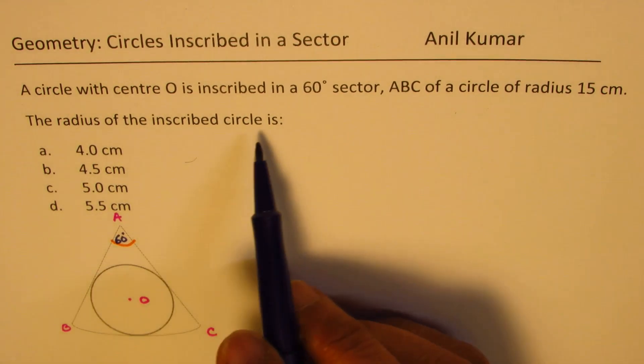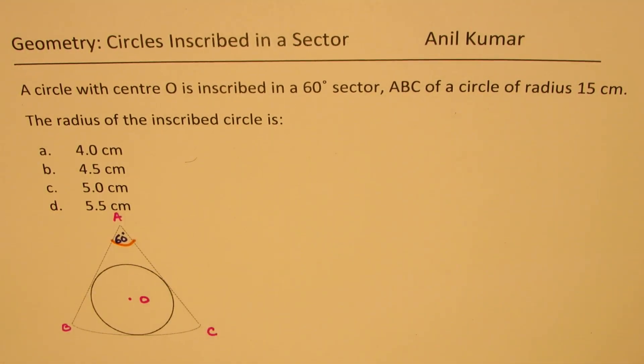The radius of the inscribed circle is, 4 choices are given to you. You can always pause the video, answer the question and then look into my suggestions.